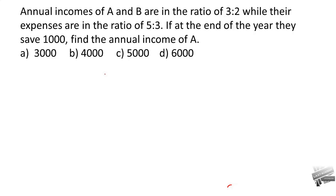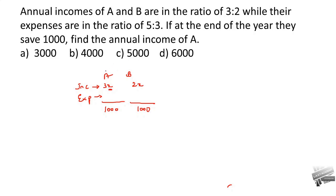When we see these types of questions, first of all, we should recognize there are two people A and B — they have certain incomes, certain expenses, and they save something. In this case they save 1000 each. So if income of A is 3x, income of B will be 2x. Expenses are in ratio 5 to 3, so we use a different constant y: expenses of A are 5y and expenses of B are 3y.